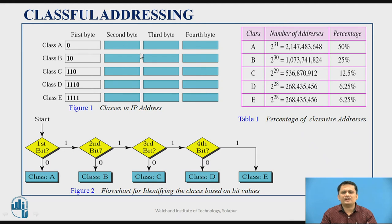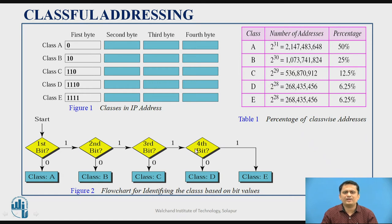In IPv4, the 32-bit address is made up of four bytes. The most significant bits of the first byte identify the class. For class A, the most significant bit is 0. For class B, it is 10. For class C, it is 110. For class D, it is 1110. For class E, it is 11111. To identify the class algorithmically: if the most significant bit is 0, it is class A; if 1, check the next bit — if 0, it is class B; otherwise check the third bit, and so on.